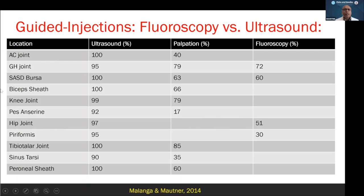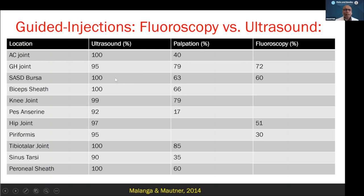In a study published by Dr. Gerard Malanga and Dr. Mautner, ultrasound shows 100% accuracy for AC joint injection versus 40% with palpation. For the glenohumeral joint, ultrasound gives about 95% accuracy versus 79% palpation and 70% fluoroscopy guidance. For the subacromial-subdeltoid bursa, ultrasound is 100% compared to about 60% for palpation and fluoroscopy. Bicep sheath is 100% with ultrasound versus 66% palpation. For the knee joint, palpation gives 79% accuracy, but ultrasound guidance achieves 99%. For the tibiotalar joint, ultrasound gives 100% versus 85% for palpation.